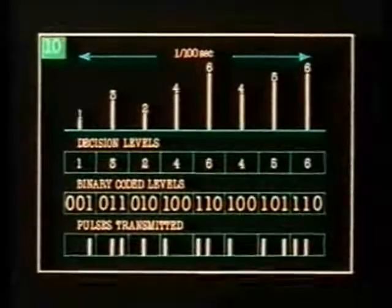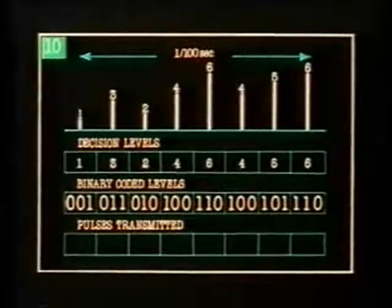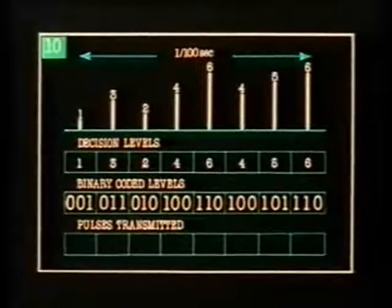The conversion of numbers into binary code is the last stage before transmission. And this again is done by an electronic circuit.